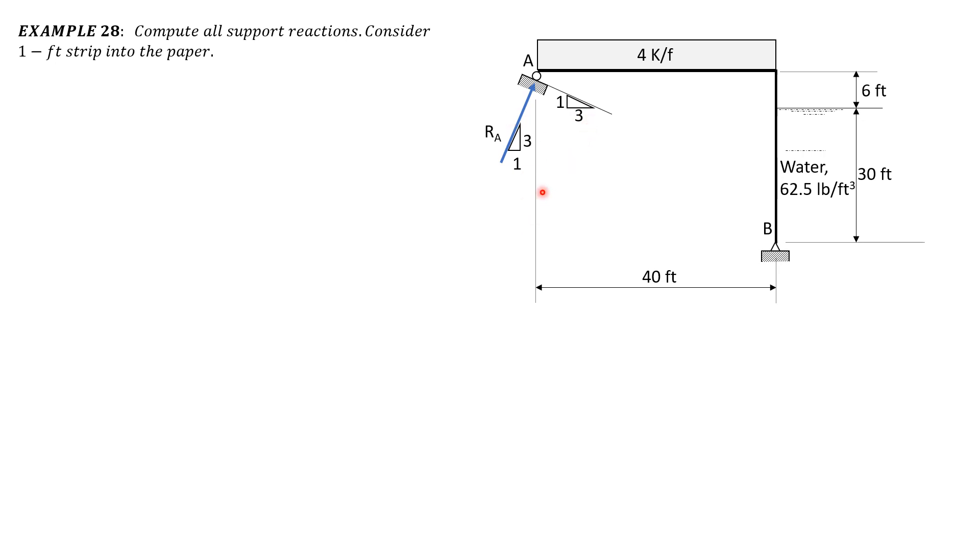From the vertical we have also one to three vertical. So we have vertical reaction at B, then horizontal reaction at B. That's the assumption. And this is the pressure distribution. Pressure at B is 62.5 times 30.